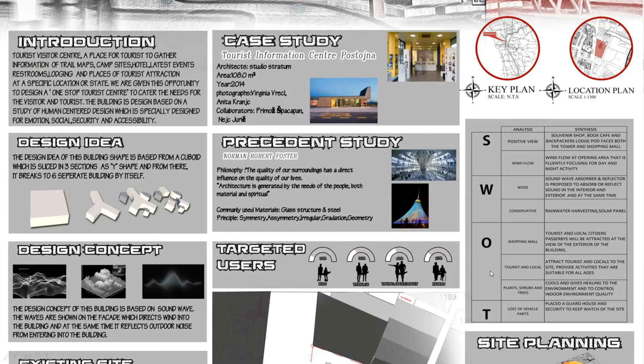The next is a precedent study. I've studied Norman Robert Foster, and the materials he always uses are glass, structure, and steel. The principles he always uses are symmetry, asymmetry, irregular, gradation, and geometry.